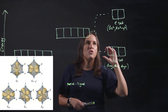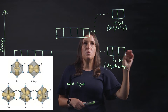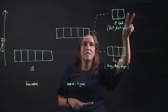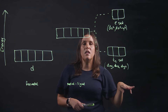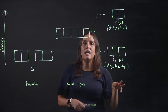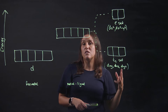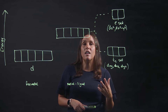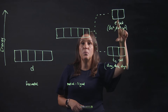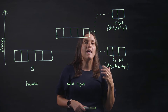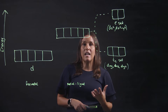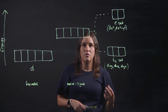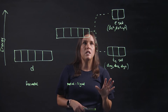Knowing that in an octahedral complex you have two orbitals in the high energy E set and three in the lower energy T2 set helps you determine particular properties such as the colour, based on the gap between these two, and the magnetic properties based on how many unpaired electrons you have.